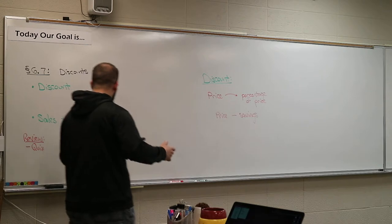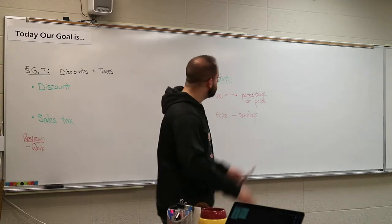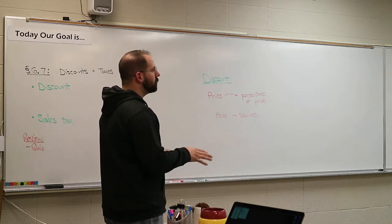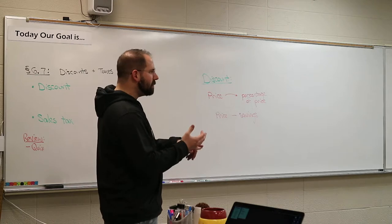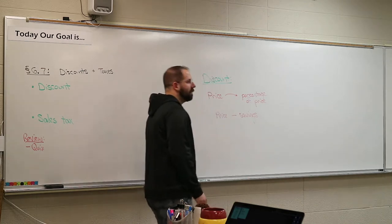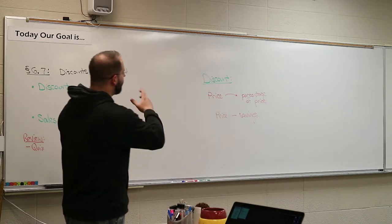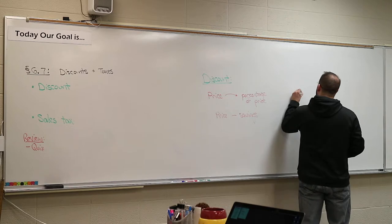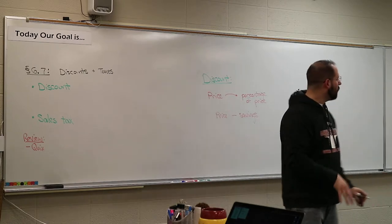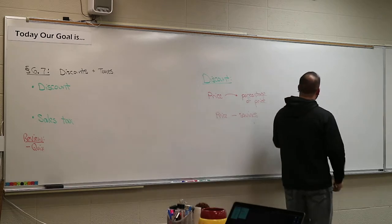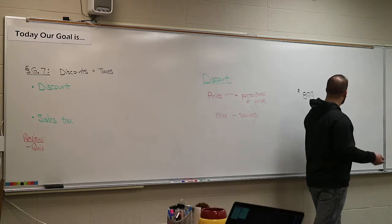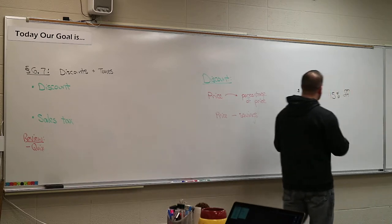The example I'll use in class is getting a new phone for my wife — she just broke her iPhone 7 and snapped the screen. We're looking at whether to get an iPhone 8 or an X, and what the discounts are. The iPhone 8 we're looking at is $899 — 256 gig — and at Best Buy they're offering 15% off.